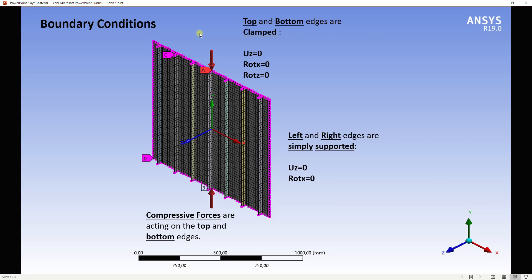Let's continue with the boundary conditions. The top and bottom edges will be clamped — displacement in the Z direction will be restrained, and rotation of X and rotation of Z will be restrained. For the left and right edges they will be simply supported — displacement in the Z direction will be restrained and rotation of X will be restrained. At the same time, there are two compressive forces acting on the top and bottom edges that cause buckling.